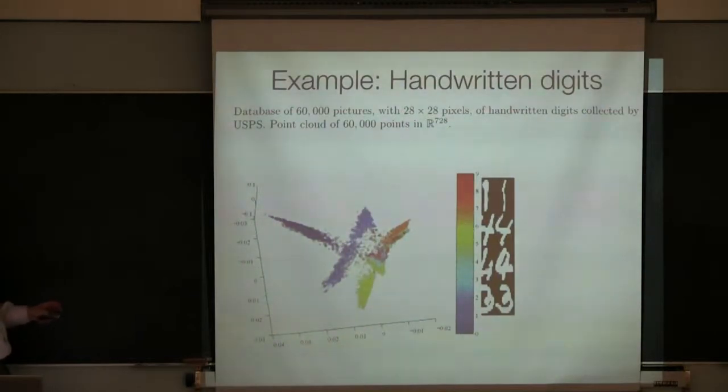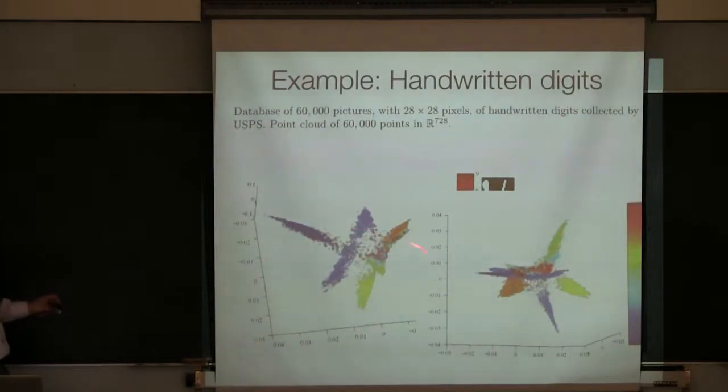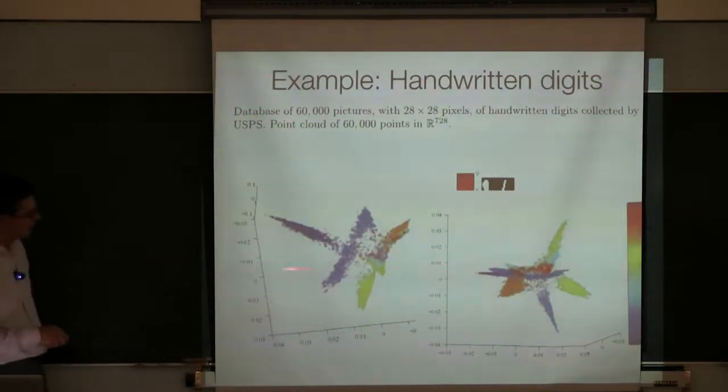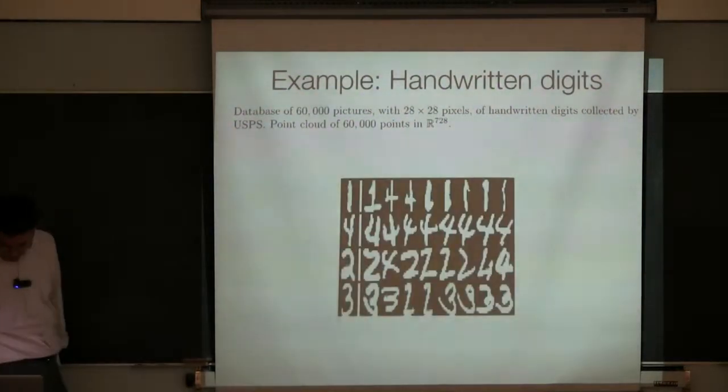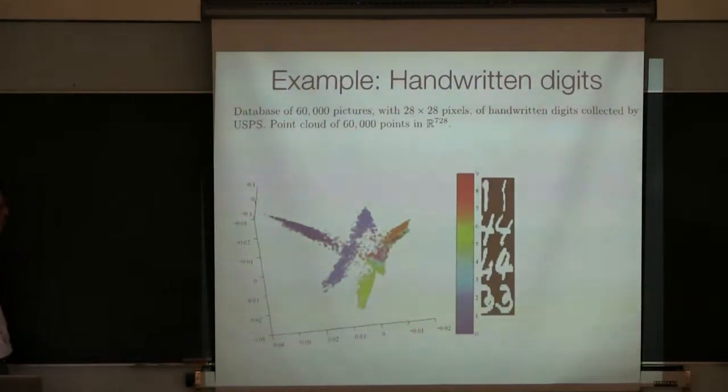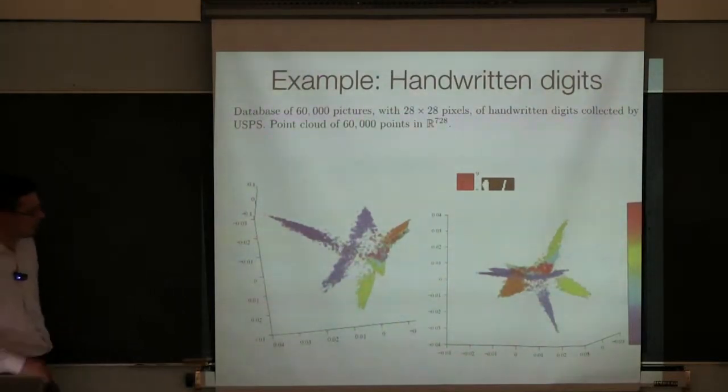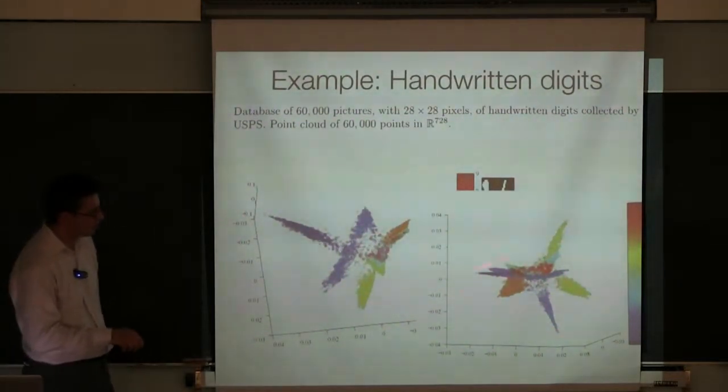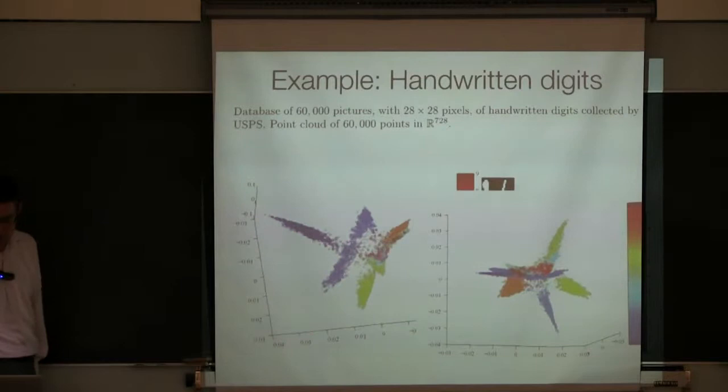And these pictures live in about 800 dimensions, but you can embed them down in low dimensions using the technique that I mentioned before. And each point over here is one of those pictures embedded down, and they're colored by the corresponding digit. So dark blue are zeros, these are the ones, and so on. And different digits tend to lie in different regions of space, and again that offers hope that if you work in these low dimensional representations you can learn that function efficiently.